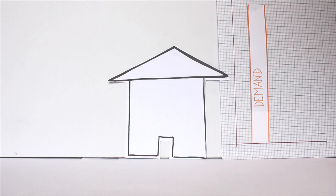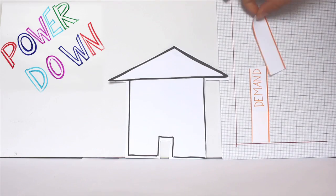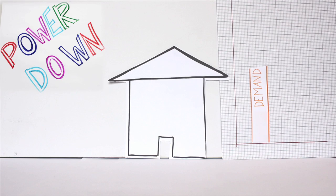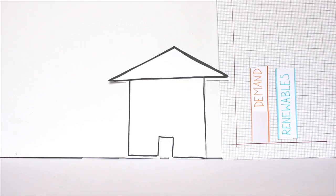By reducing our energy usage in buildings and transport, we could power down our energy needs by as much as 56% by 2030. This will enable us to power up Britain with 100% renewable energy.